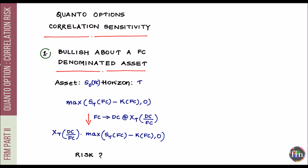Let's take the perspective and position of a US-based investor who is bullish about a foreign currency denominated asset. Let that asset be, for example, Nikkei 225 which is denominated in JPY. As far as nomenclature is concerned, let's assume that this asset is currently trading at a level S0, and this S0 is in JPY.